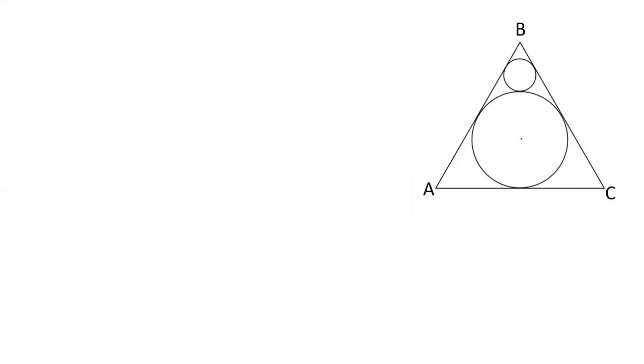Suppose this point, this center of the bigger circle is O, the center of smaller circle is O'. This is the radius which is r. This is the radius of bigger circle which is capital R. And this is the side. Let us join BO' and O.